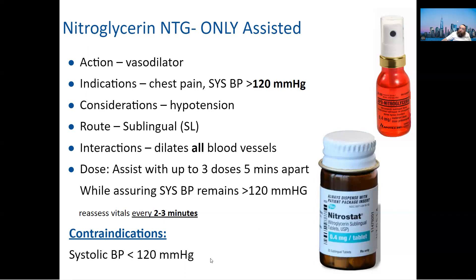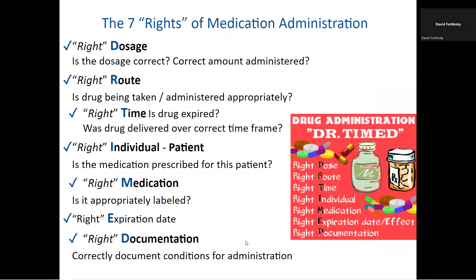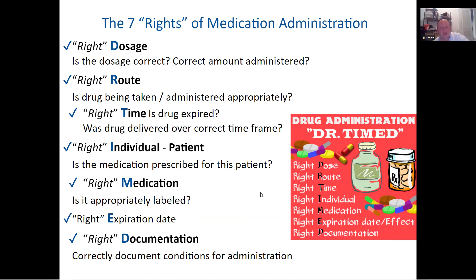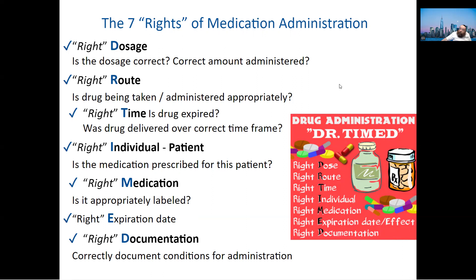If the patient is at 140 systolic and you give NTG and it drops 60 points, now they're at 80 — now they're in shock. Use it if they have it, but be very careful. For test questions: blood pressure must be above 120 systolic. Every patient is different — sometimes it only drops 10 or 20 points.